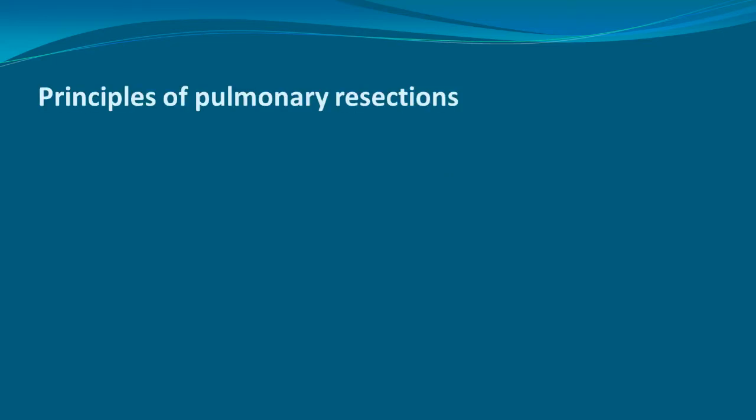Principles of Pulmonary Resection: If there is any doubt about the resectability, all of the vascular and bronchial structures should be identified prior to the division of any structure, to be sure that the lesion can be removed with integrity and safety. For VATS resection, the veins and arteries are dissected.